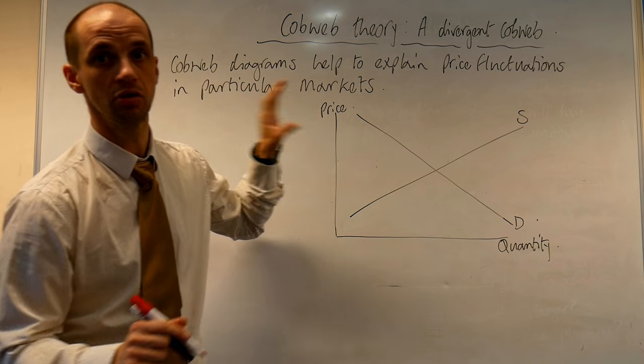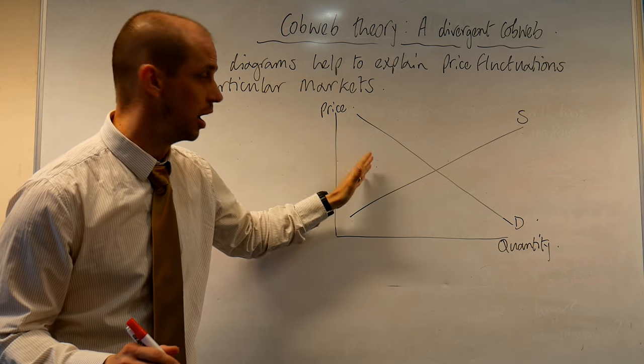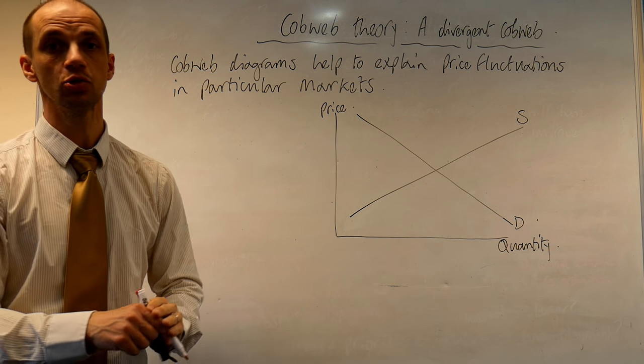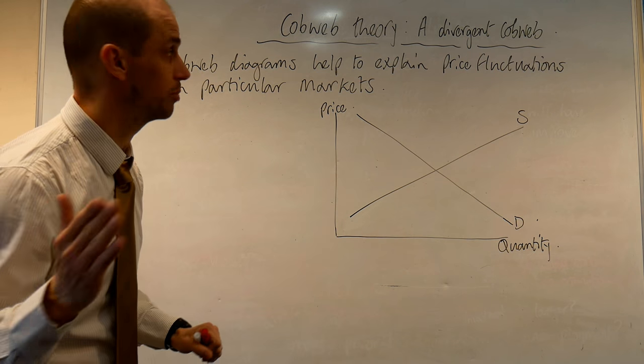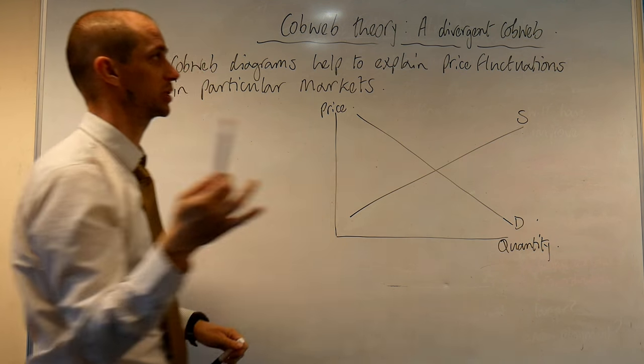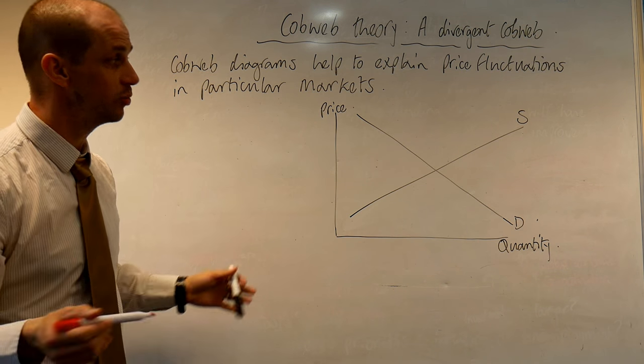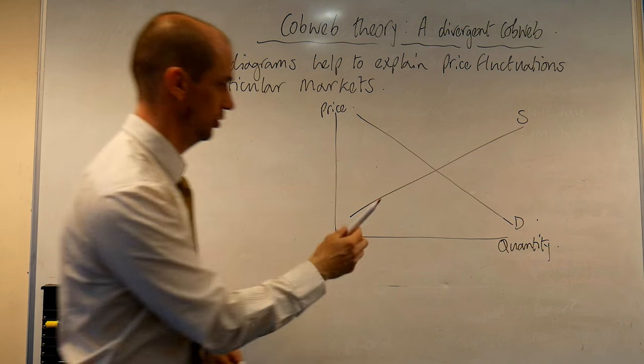Examples of where this could be applied include agricultural production, production of coffee, production of wheat, soybeans. Any sort of crop-based produce is very appropriate here. Cobweb diagrams help to explain price fluctuations in particular markets, focusing on primary products, primary produced goods.